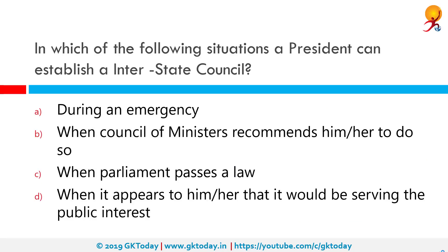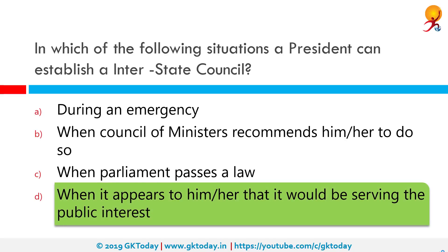In which of the following situations can a president establish an interstate council? The correct answer is when it appears to him or her that it would be serving the public interest. Article 263 of the constitution of India provides that if at any time it appears to the president that the public interest would be served by the establishment of an interstate council, he or she is at full privilege to do so.